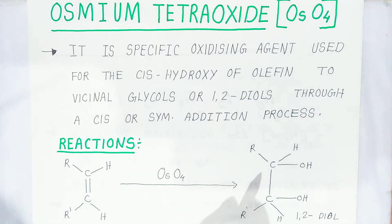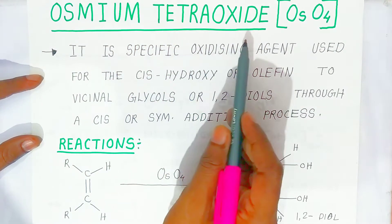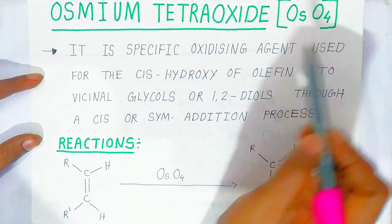Hello students, once again welcome to Bholangata Academy. Today we are going to see one more important oxidizing agent that is called osmium tetroxide. Formula is OsO4.